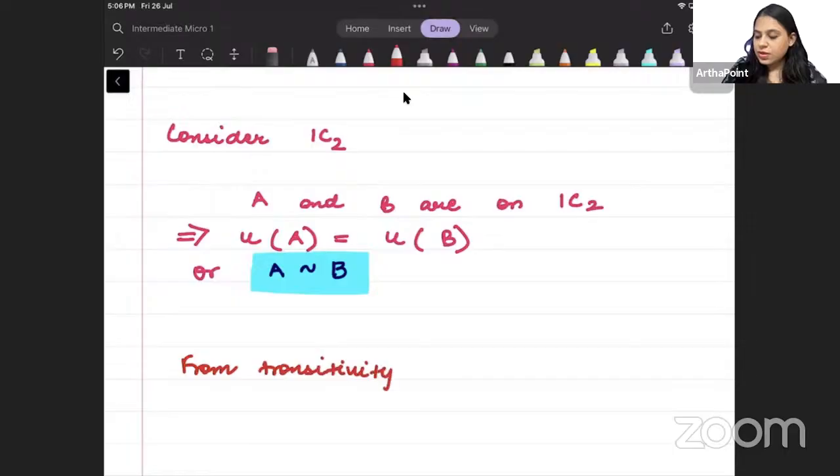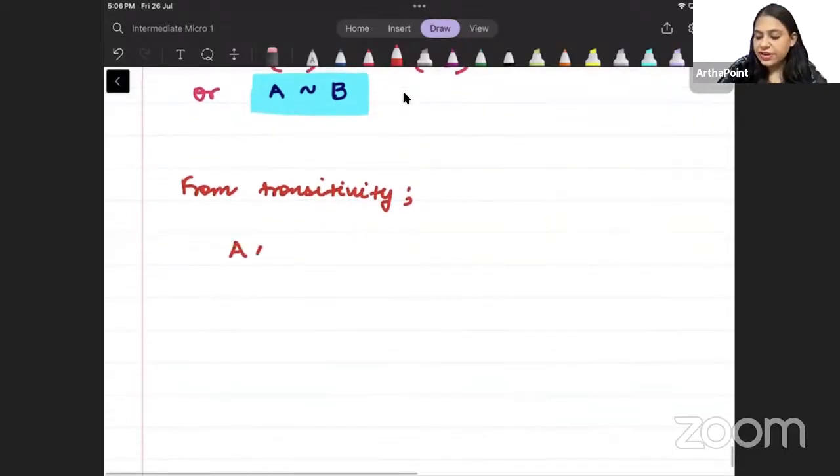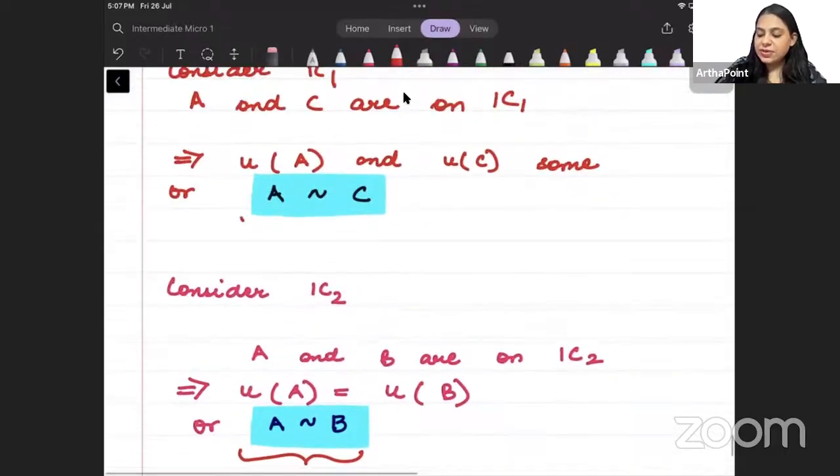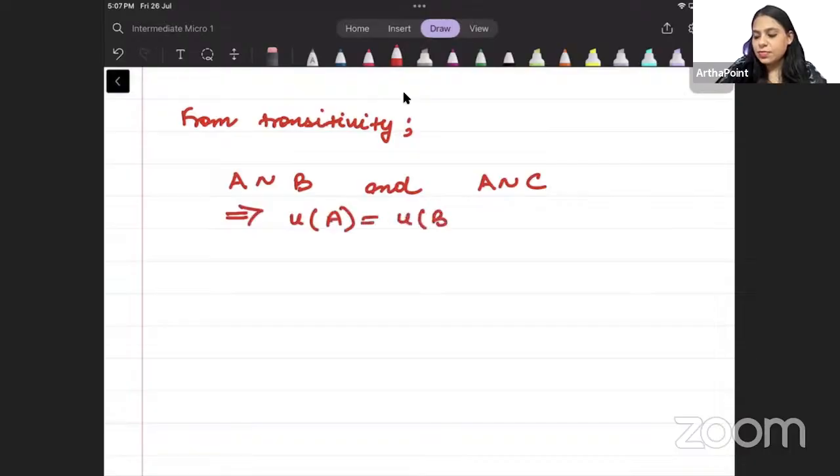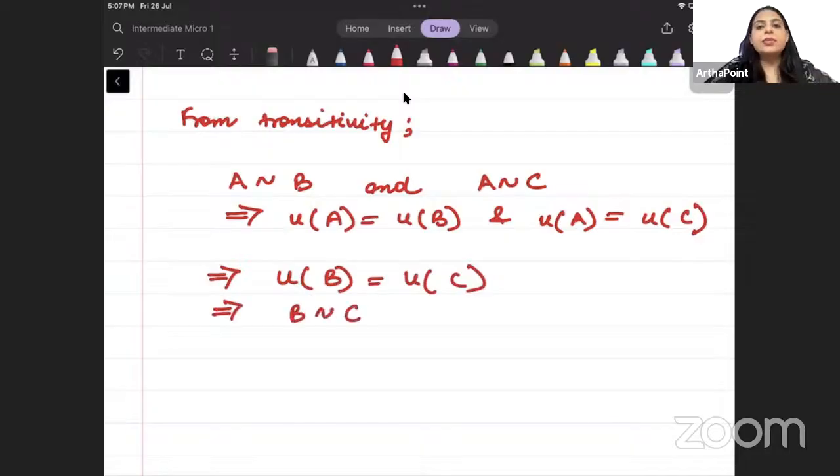So this tells me that utility of B and C should also be the same. That means the consumer should be indifferent between B and C. The consumer will be indifferent between point B and C.